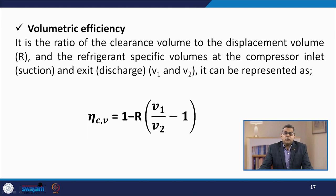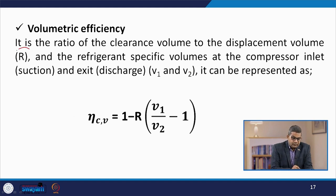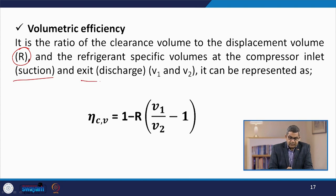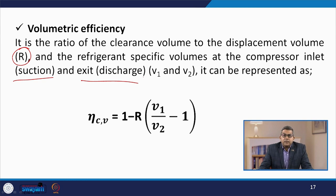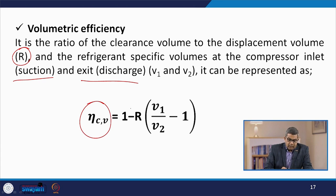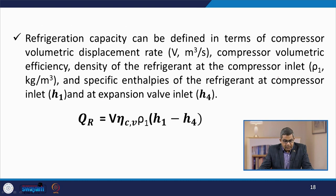Volumetric efficiency is the ratio of clearance volume to displacement volume r, and the refrigerant specific volumes at compressor inlet (suction) v₁ and exit (discharge) v₂. Mathematically, volumetric efficiency η_v = 1 − r × (v₁/v₂ − 1).